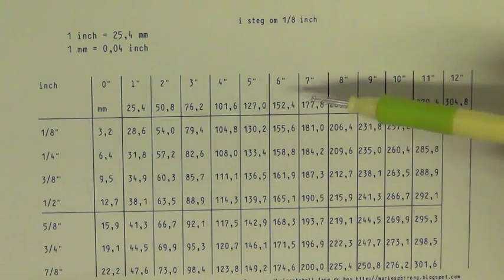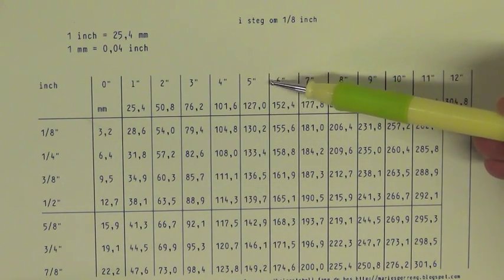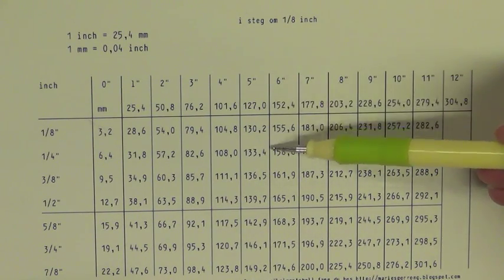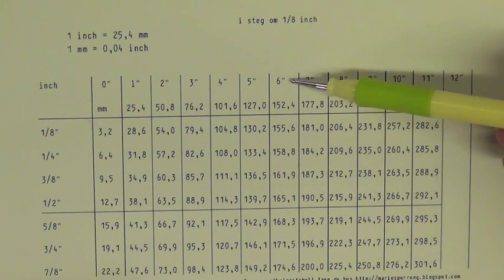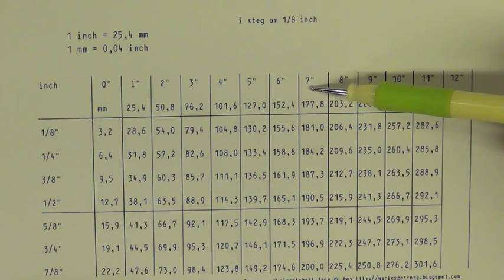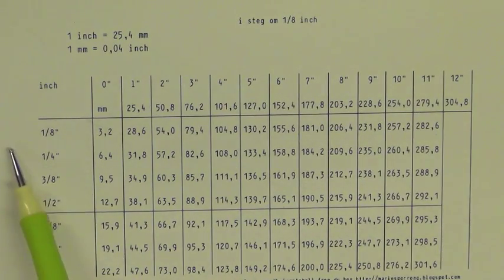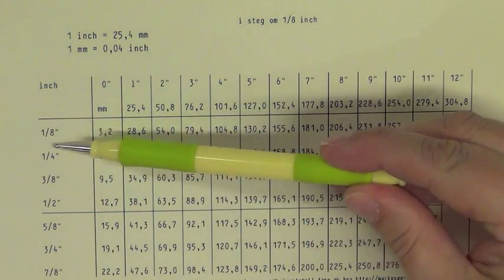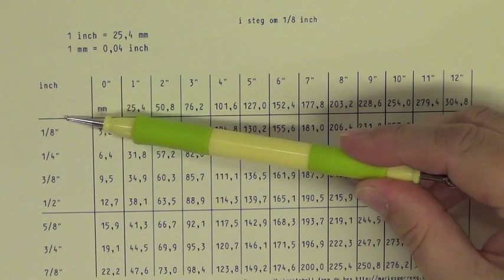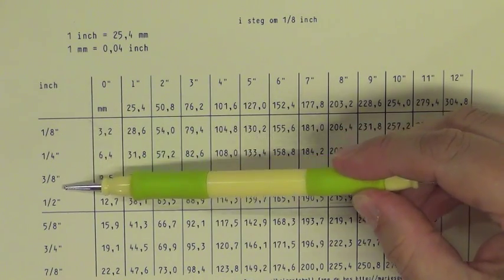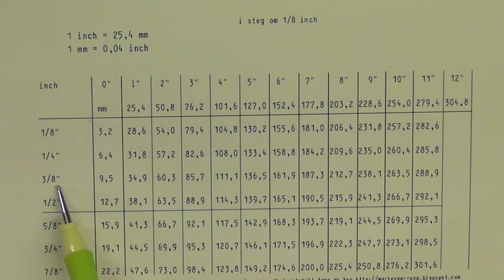Then you have to look under 6, because all these are under 6 inches and over 6 inches, but not up to 7. So this is where you are going to look. And then you have to look on this left side too, because you want to find the 3/8 inch. And here is the 3/8 inch.